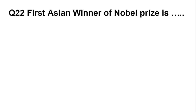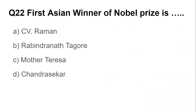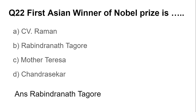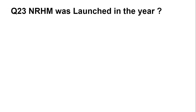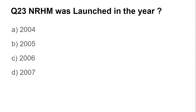Question number twenty-two: First Asian winner of the Nobel Prize — options are C.V. Raman, Rabindranath Tagore, Mother Teresa, and Chandrasekhar. The answer is Rabindranath Tagore, the first Asian Nobel Prize winner. Question number twenty-three: NRHM (National Rural Health Mission) was launched in the year — 2004, 2005, 2006, or 2007. The answer is 2005.